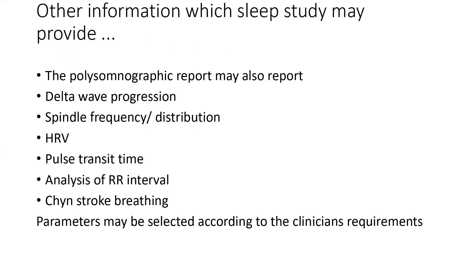A sleep study provides more than just those three or four parameters discussed. It is a more detailed analysis. If we wish, we can select channel templates that give analysis of delta wave progression, slow wave sleep data, spindle frequency and distribution — useful for research purposes — as well as heart rate variability during sleep, pulse transit time, RR interval, and Cheyne-Stokes breathing. According to the clinician's requirement and the patient's presentation, a lot of data can be analyzed from the sleep study, which definitely helps in making a better clinical diagnosis and leading toward more holistic management of patients with sleep disorders.